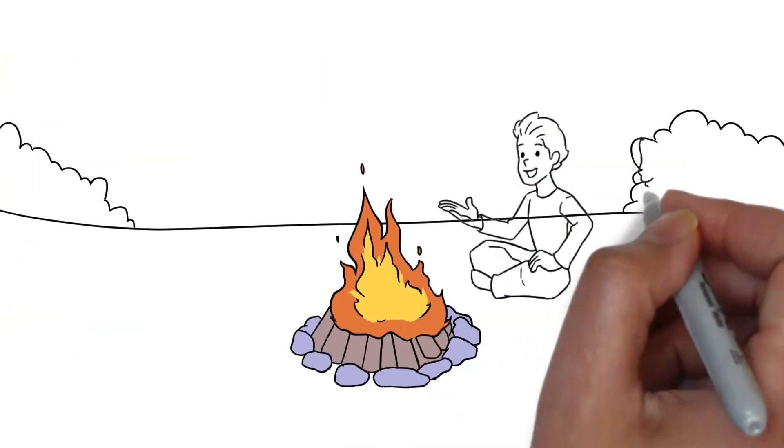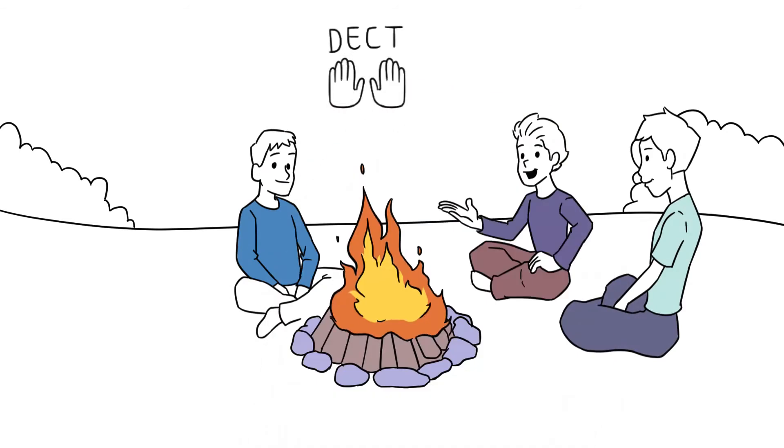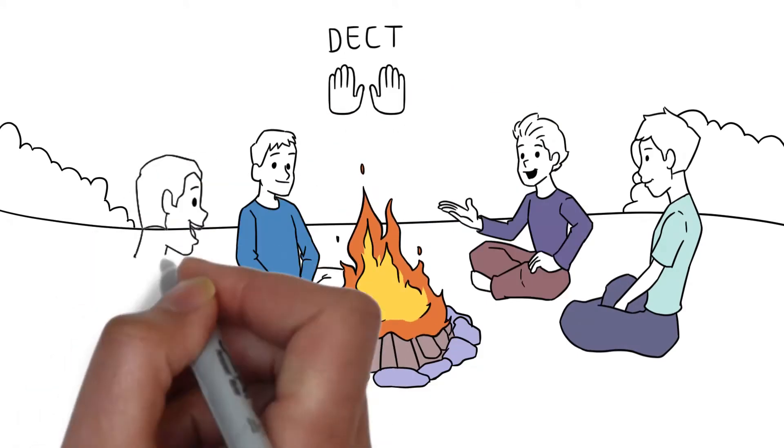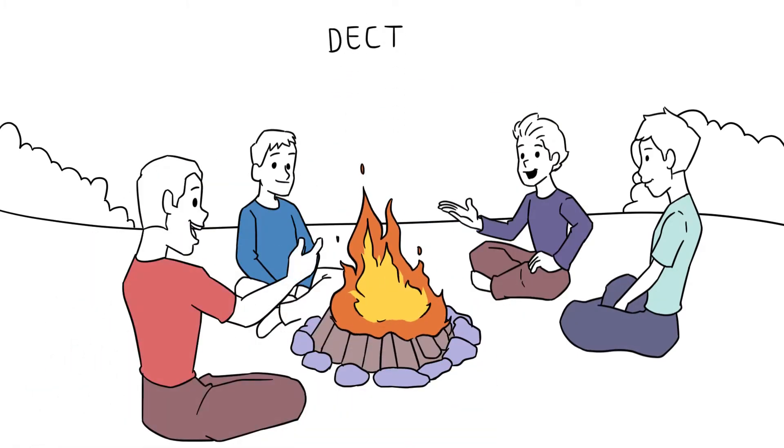DECT, a star-based communication method, is designed for hands-free conversational group communication, which means everyone can talk to everyone else, as if they were all sitting together around a campfire.